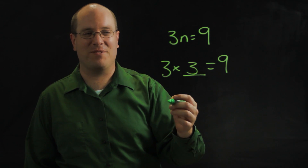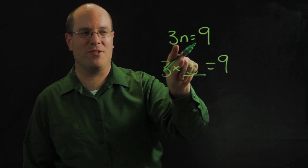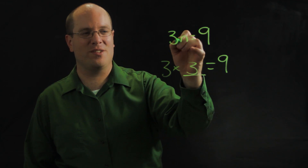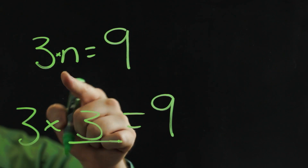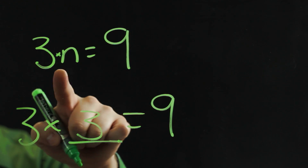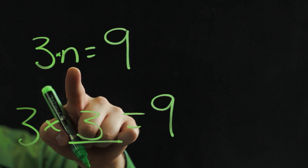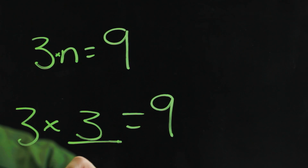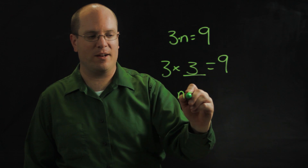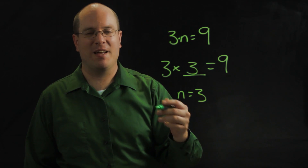Then all you have to do is teach them that when you have a letter next to your number, that just means there's an invisible times and that n is a blank space. So what goes in the blank? Well, like we wrote here, a three does. So they would write n equals three.